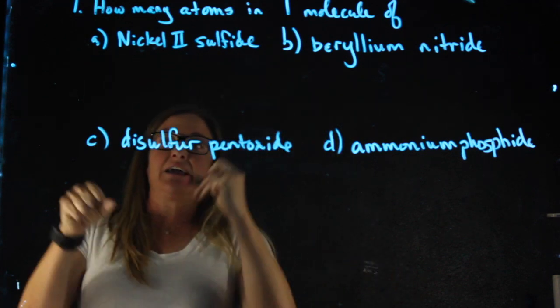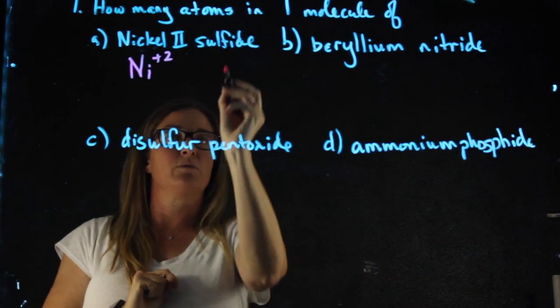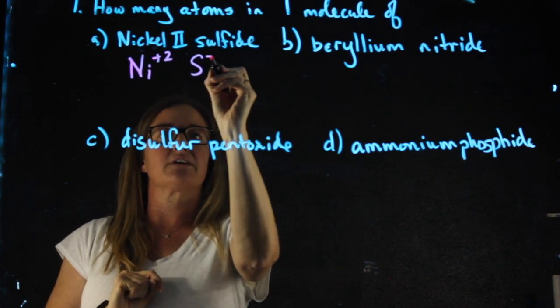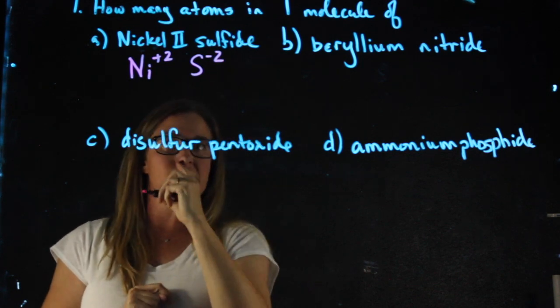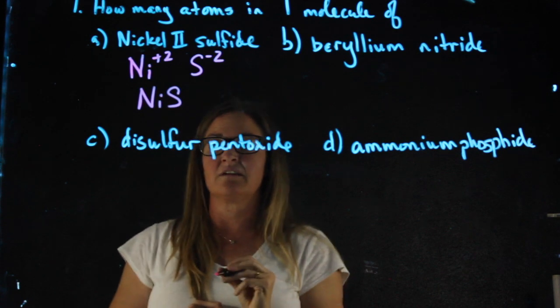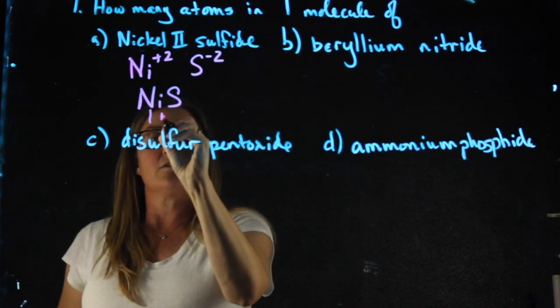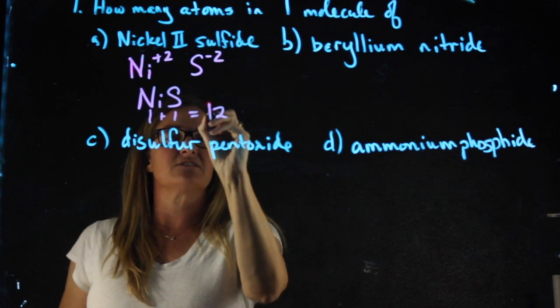Nickel(II) sulfide. Nickel is a transition metal so this 2 tells me its charge is plus 2. Sulfide, sulfur, with a minus 2 charge. These two go together directly like this because the charges cancel. One nickel plus one sulfur is two atoms.